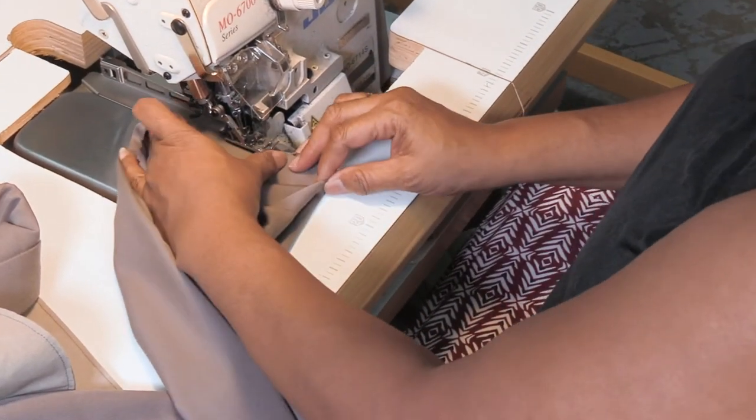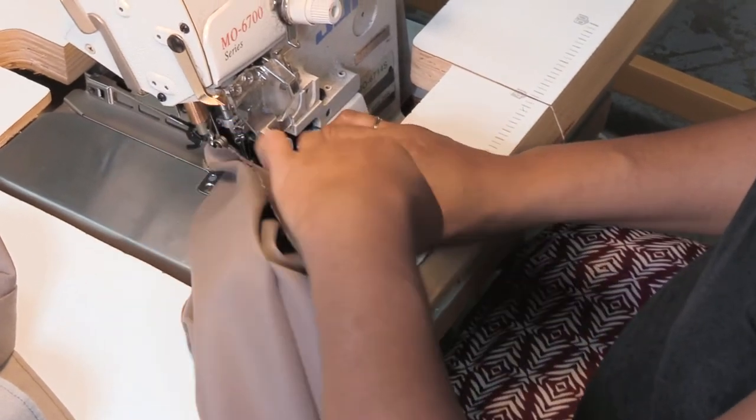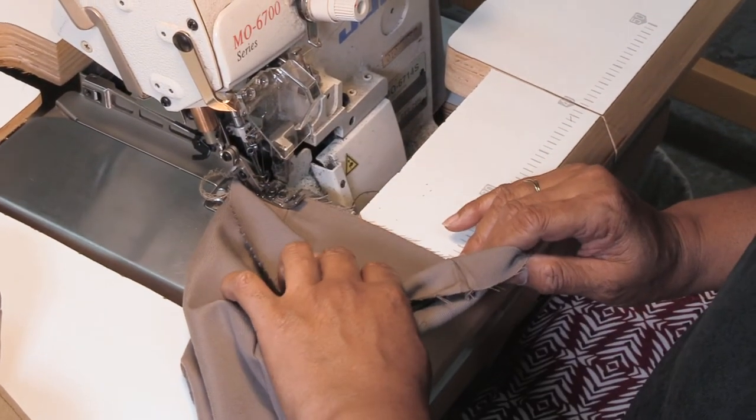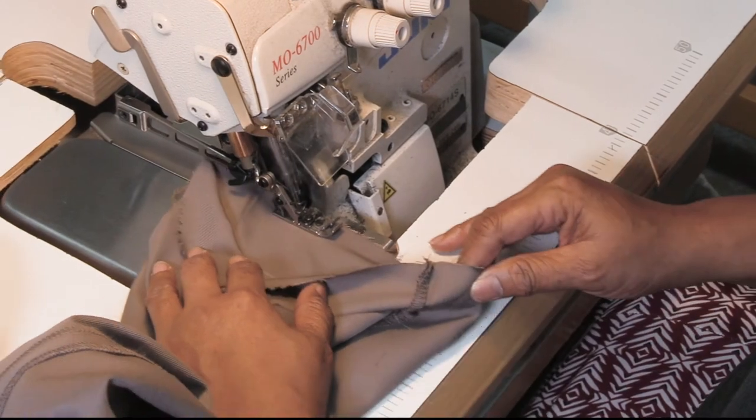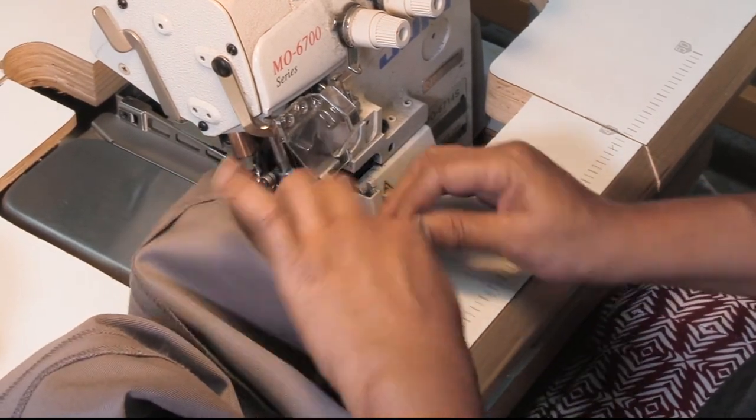Serge the raw edges around the top of the hem allowance. This will keep your raw edges from raveling. If you cut with pinking shears, serging the hemline is not needed.